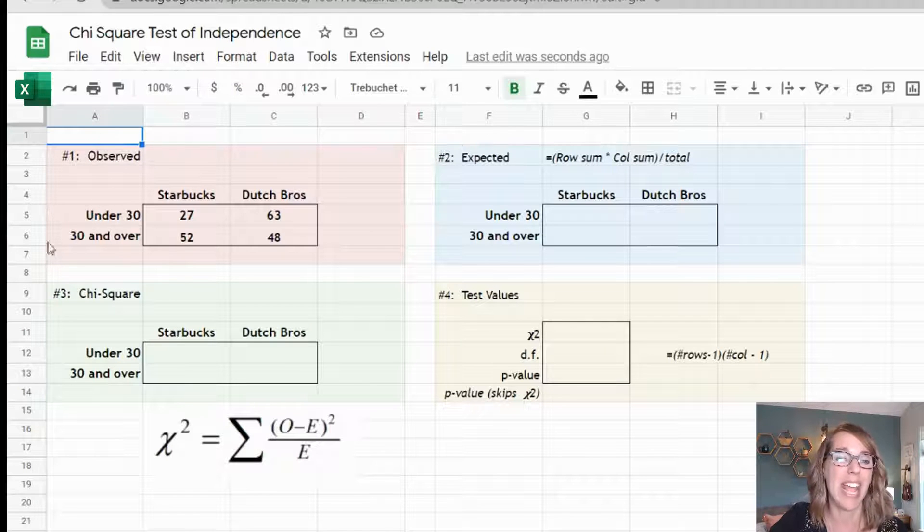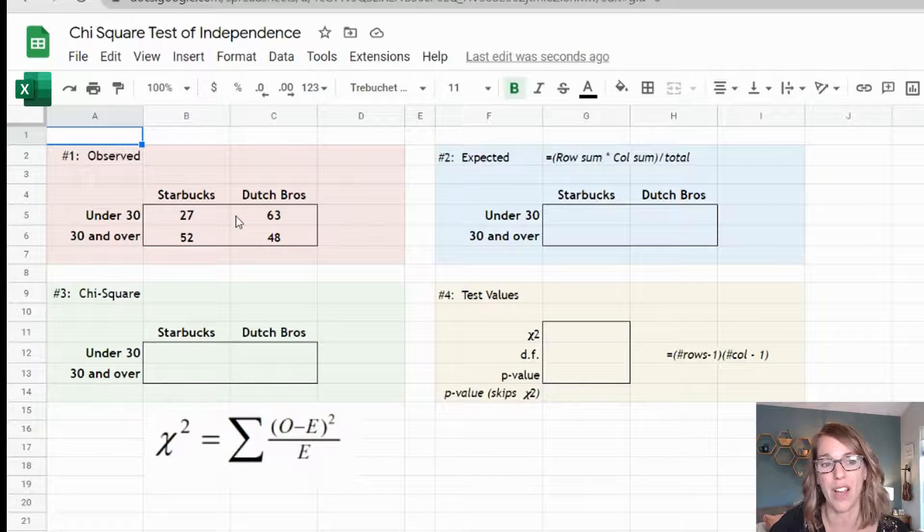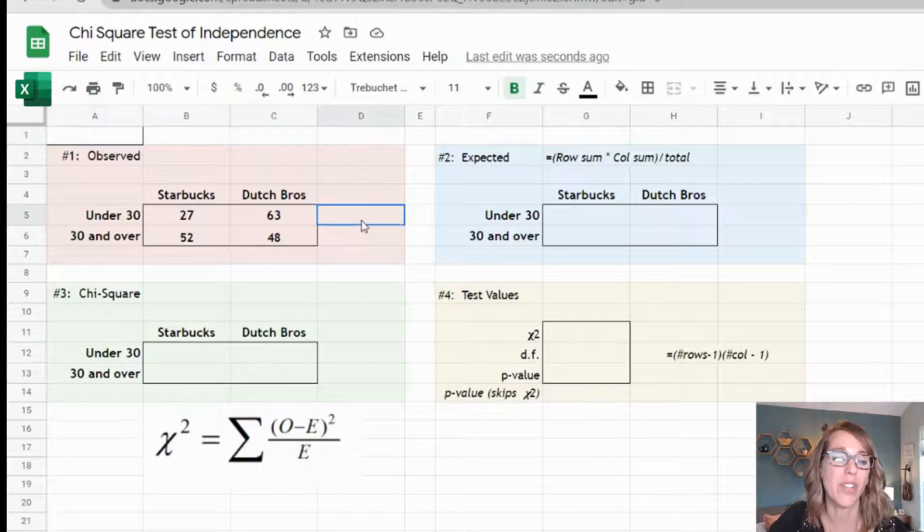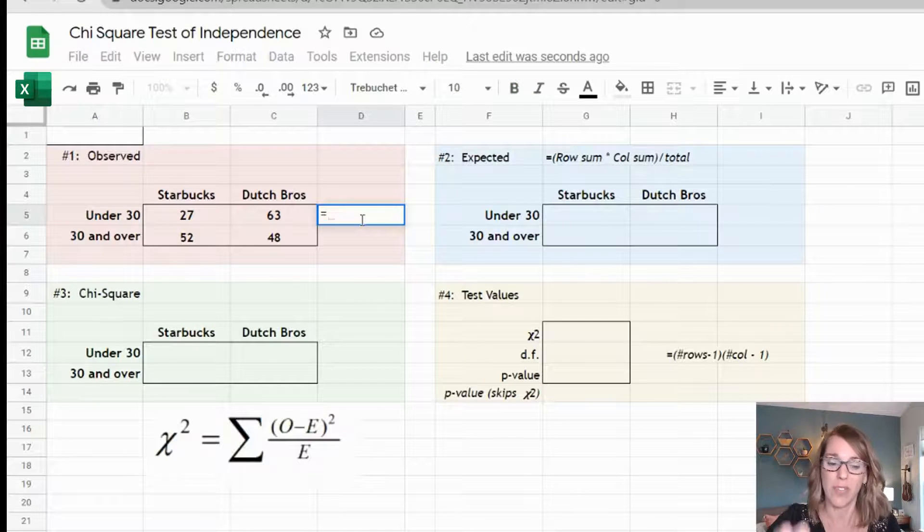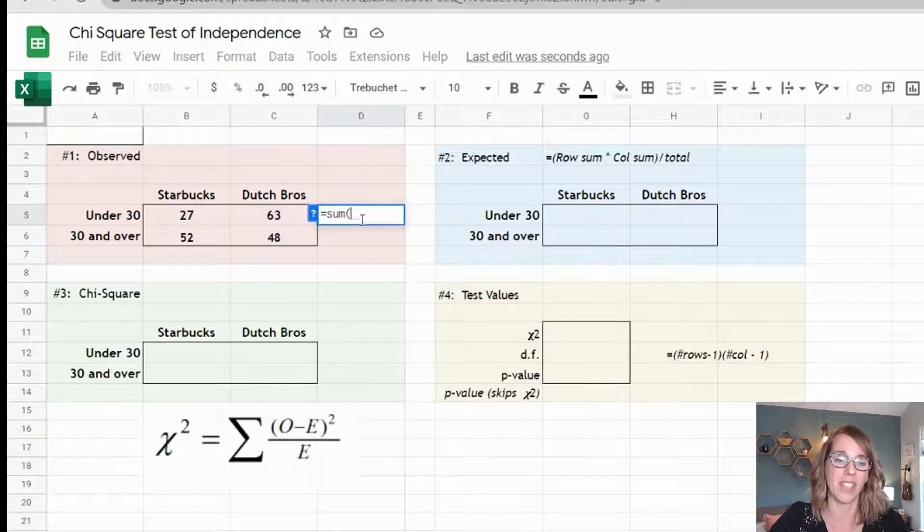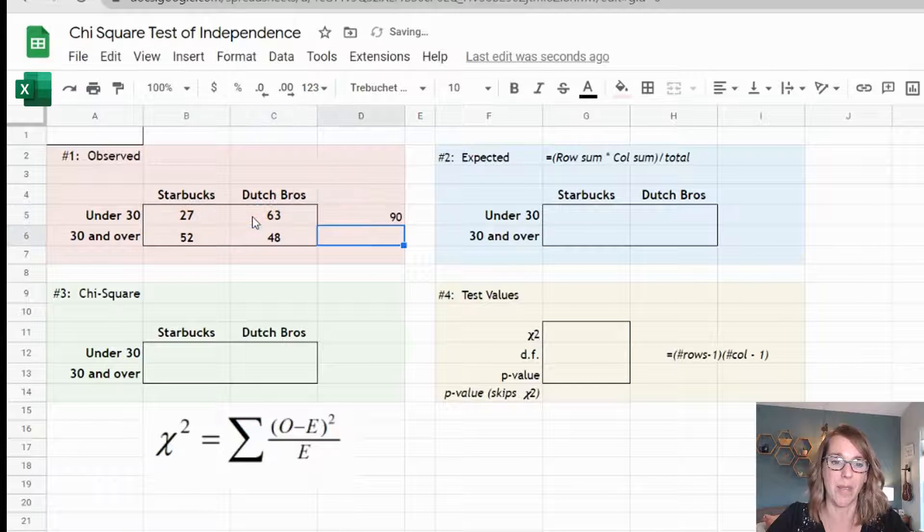I'm running a test to compare ages and preferred coffee place. The first thing I want to do is come up with my row and column sums. I'm going to go to the end of a row and type equals sum parenthesis, then click, hold and drag over the cells that I'm adding.